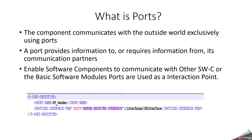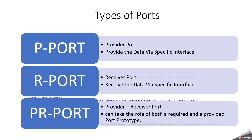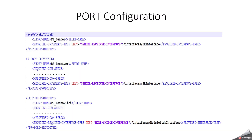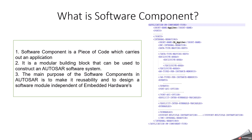A port provides information or requires information from its communication partners. The types of ports are: P-port, R-port, and PR-port. P-port is a provider port — it provides data via a specific interface. R-port is a receiver port — it receives data via a specific interface. PR-port is a provider-receiver port — it can take the role of both the required and provided port prototype.